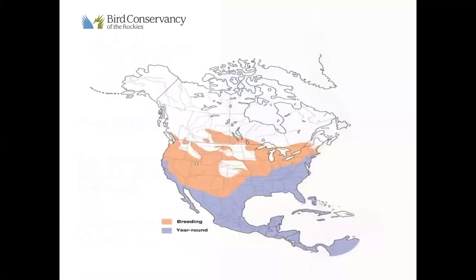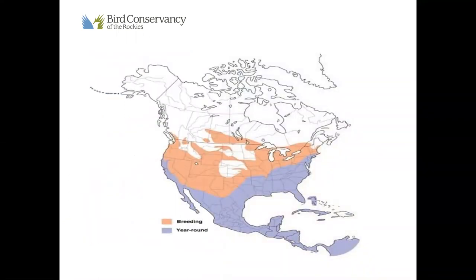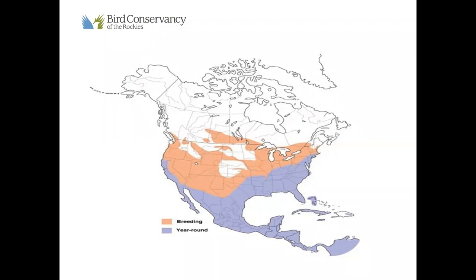This is the turkey vulture range map — reddish colors indicate breeding range, and that bluish-purple indicates year-round range. Some turkey vultures in the southern United States are year-round residents. Some birds in the northeast migrate short distances southward to North Carolina or Louisiana. Western birds tend to migrate much farther, with large numbers — more than a million — moving through Central America and in some cases as far as Ecuador.